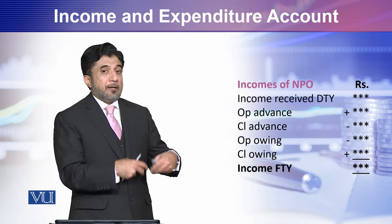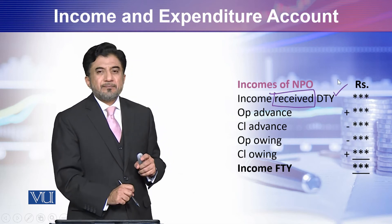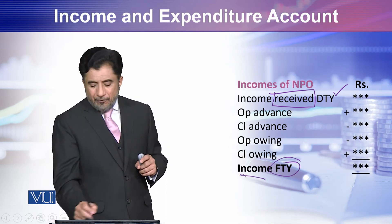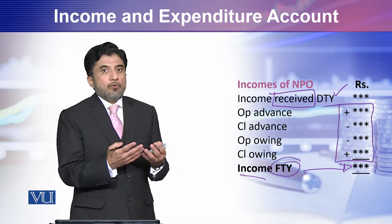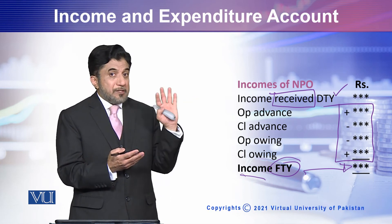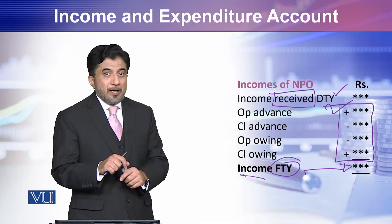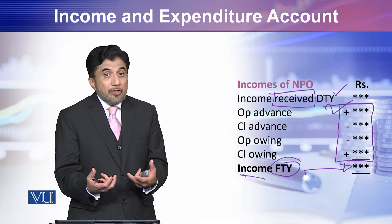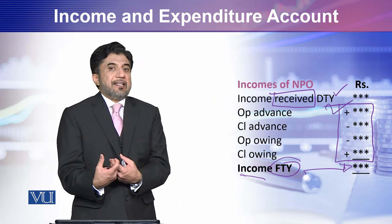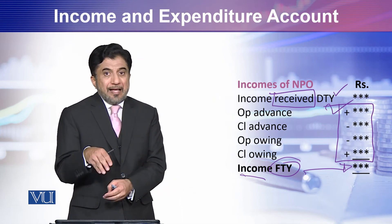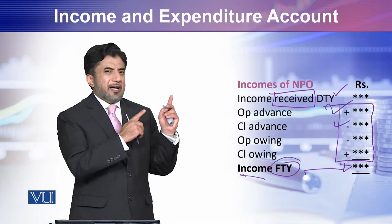This is the same income filter you can apply. Income received during the year — to get income for the year — you apply the same logic. The opening advance received in the past year: this year that income has already been included, so minus it. This year if you received income in advance, that is again not your income for the year — it should be presented as income in the next year, shown as a liability, minus from income.